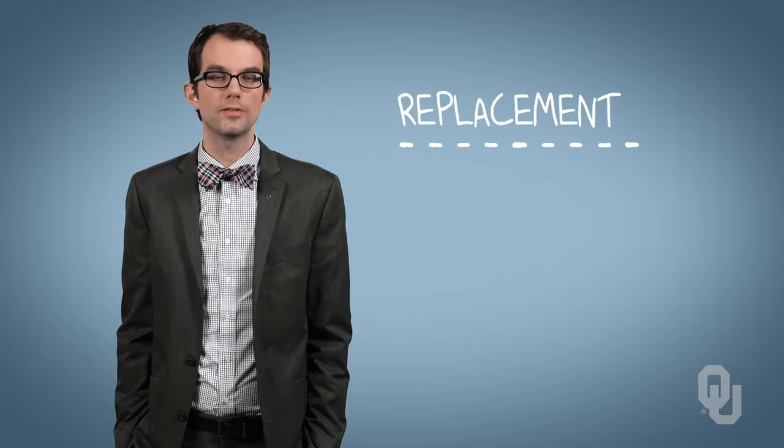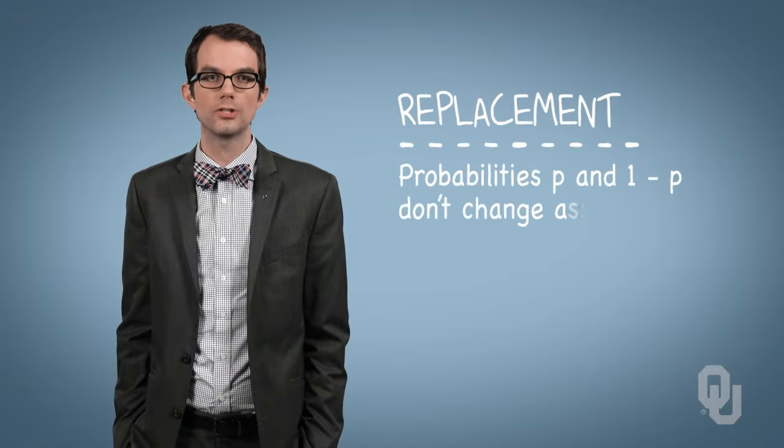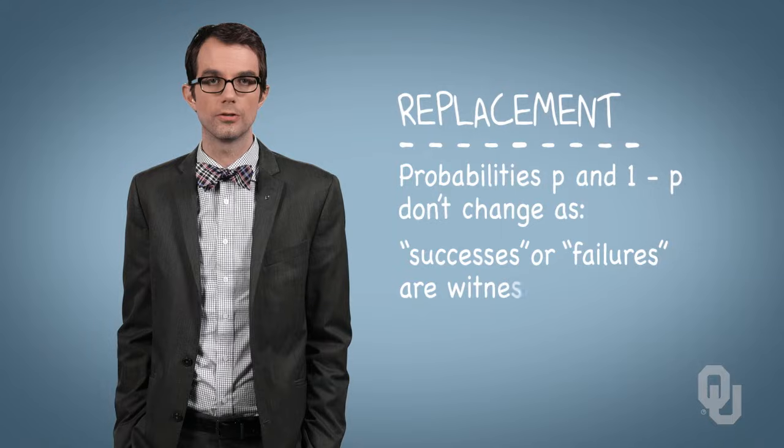The binomial distribution that we discussed previously assumes replacement. That is, the probabilities p and 1-p don't change as successes or failures are witnessed.